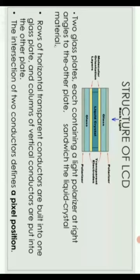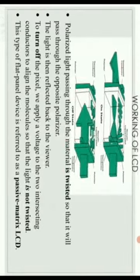In one glass plate, horizontal conductors are used, and in the other glass plate, vertical conductors are used. The intersection of a row and column conductor defines a pixel position. Then light passes through — the polarizer is vertical, and horizontal conductors are used. Then light goes through the liquid crystal layer.